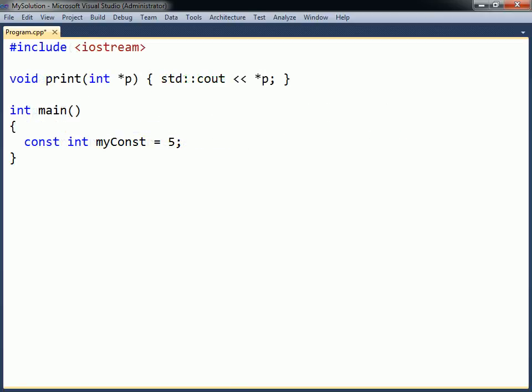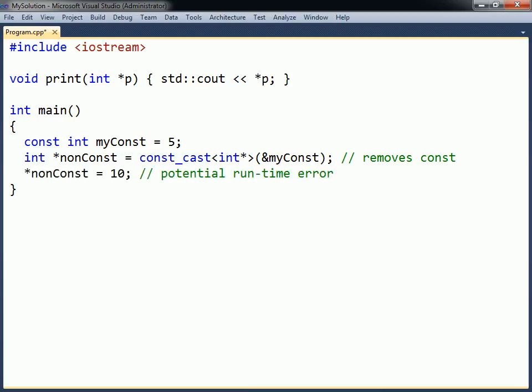The third C++ cast is the const cast. This one is primarily used to add or remove the const modifier from a variable. Although const cast allows the value of the constant to be changed, doing so is still invalid code that may cause a runtime error.